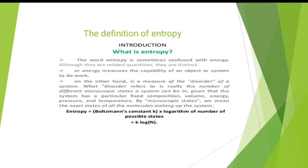Entropy is a measure of disorder, and it is given by the equation S = k ln W. Here, S means entropy, k is the Boltzmann constant, and W is the number of ways by which we can rearrange the system or a group. So entropy equals the Boltzmann constant k times the logarithm of the number of possible states.